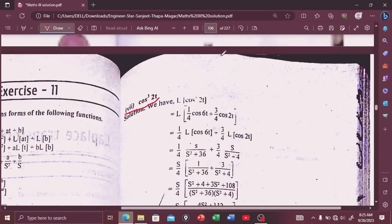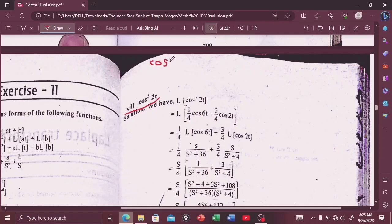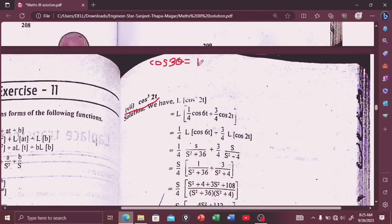We know the formula of cos 3θ is 4 cos³θ minus 3 cosθ, so we need to rearrange this.